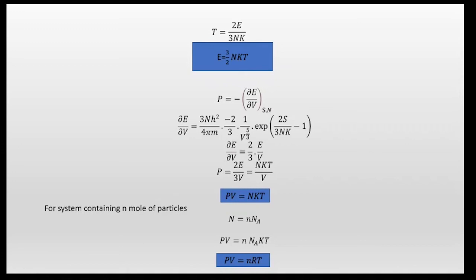We can also find the pressure as p = −(∂E/∂V) at constant S and N. Computing ∂E/∂V gives −(2/3)(E/V), so p = 2E / 3V. Substituting E = (3/2)nkT gives p = nkT/V, or pV = nkT. For a system with n moles of particles, n = N·N_A, so pV = nN_A kT = nRT. This is the ideal gas equation.